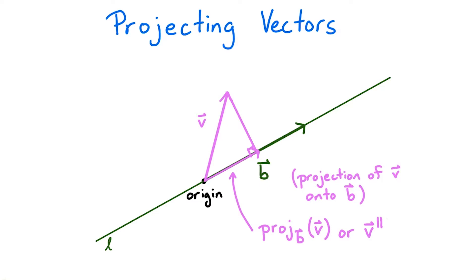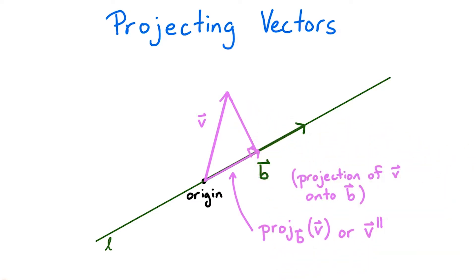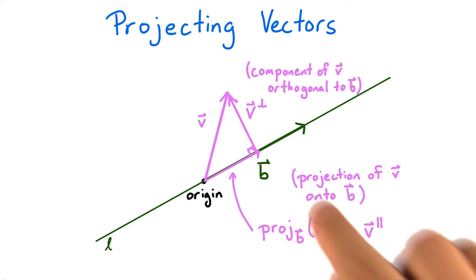The remaining leg is perpendicular to the line l, and therefore orthogonal to b. If we draw a vector along this leg, the drawn vector is the component of v orthogonal to b, which we can denote v with an upside down t called v perp.